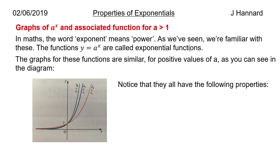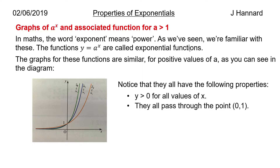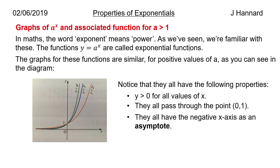They all go through 1, and they all have the following properties: y is greater than 0 for all values of x; they all pass through the point (0, 1); they all have the negative x-axis as an asymptote. An asymptote means it gets closer and closer to the line but never actually hits it — you will never get y equals 0. A to any value will not give 0. The gradient is always positive as well.